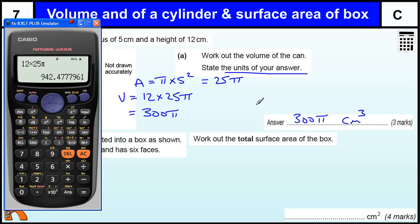You can change that to a decimal and you get 942.4777961, but there is no real point. That is more accurate than changing it to a decimal.